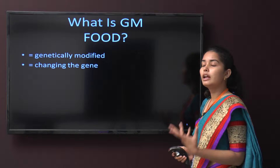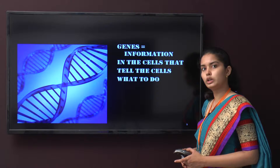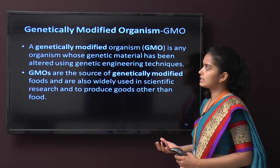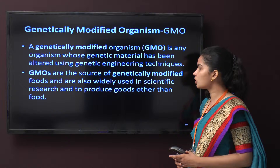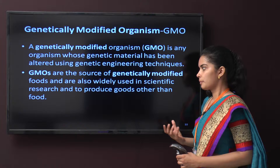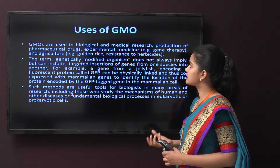Now, what is GM food? G stands for genetically modified, meaning changing the gene. Genes are the information of the cells that tell them what to do. A genetically modified organism is one whose genetic material has been altered using genetic engineering techniques, or recombinant DNA technology. GMOs are sources of genetically modified food and are widely used in scientific research and to produce goods other than food — including pharmaceuticals, drugs, experimental medicines such as gene therapy, and in agriculture.